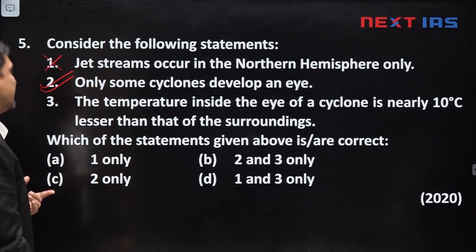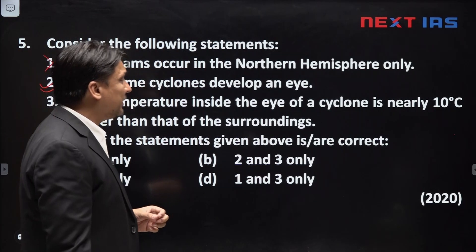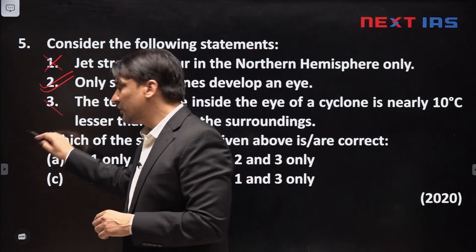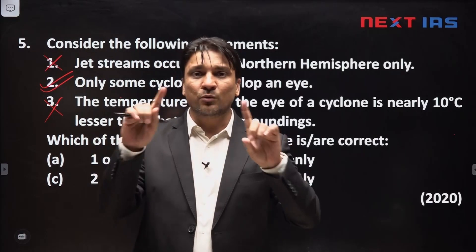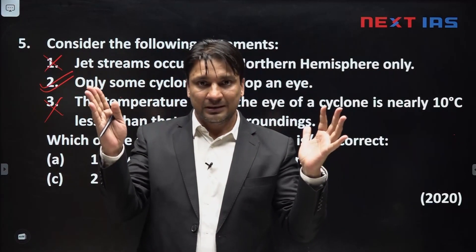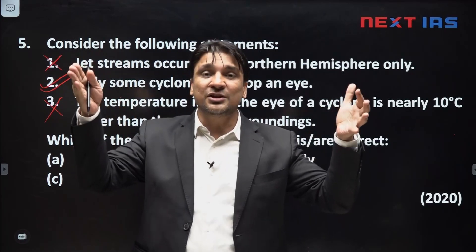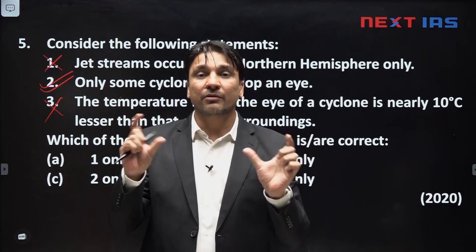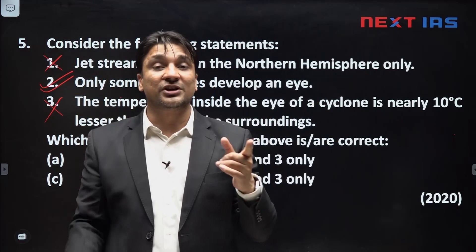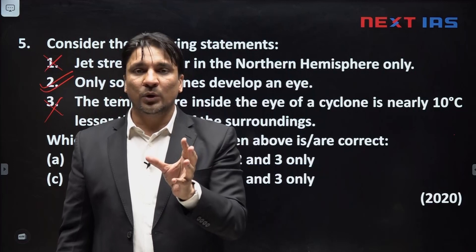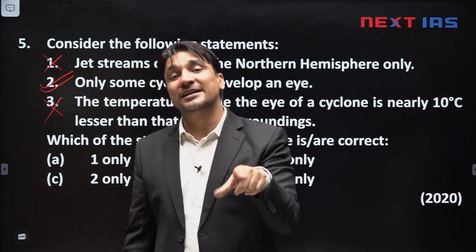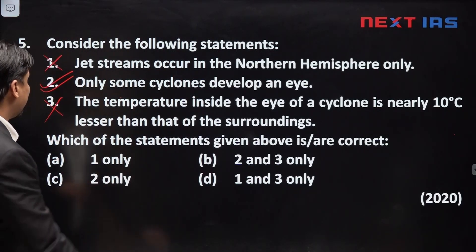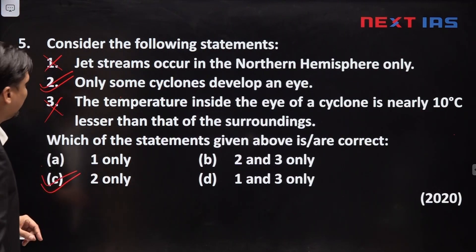So the statement that eye is present only in some cyclones is correct. The third statement — that temperature inside the eye is nearly 10 degrees Celsius less than the surrounding — is incorrect. The eye is cloudless and surrounded by the eye wall, which has strong winds, thunderstorms, and dark dense clouds causing rainfall. The eye wall therefore has relatively lower temperature than the eye. So only the second statement is correct, making C the correct answer.